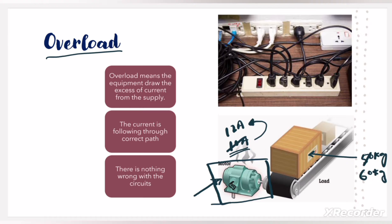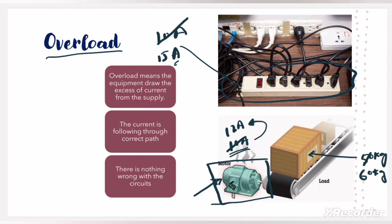Let us take another example. This is an extension board. The extension board's capacity is 10A, but we keep on adding loads to it. Now the extension board is no longer carrying 10A of current but is carrying 15A of current, which is more than its rated current, so we can say that this extension board is overloaded.